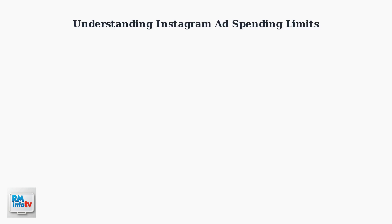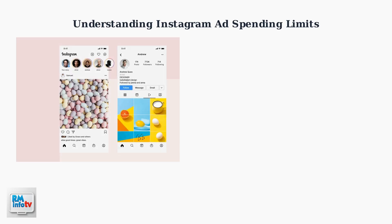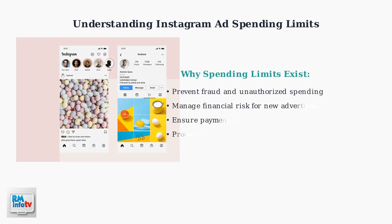Instagram enforces spending limits on advertising accounts as a protective measure. These limits serve multiple purposes, and understanding them is crucial for successful advertising campaigns. Instagram implements spending limits primarily to prevent fraud and manage risk, especially for new advertisers. These safeguards protect both the platform and advertisers from unauthorized spending and financial issues.